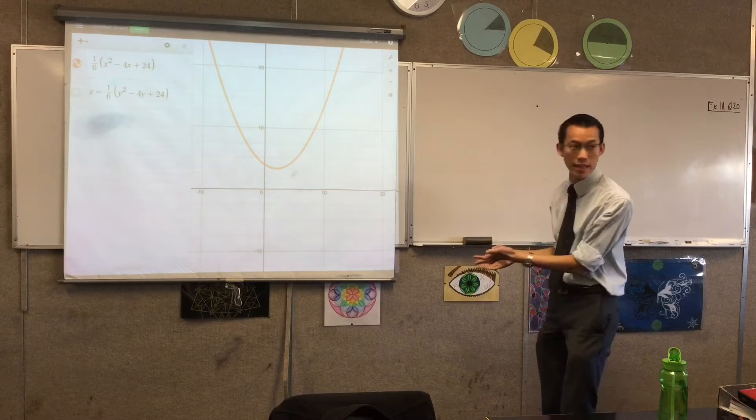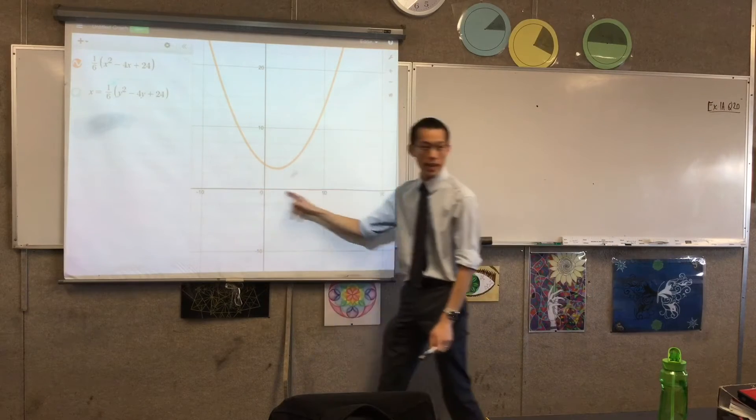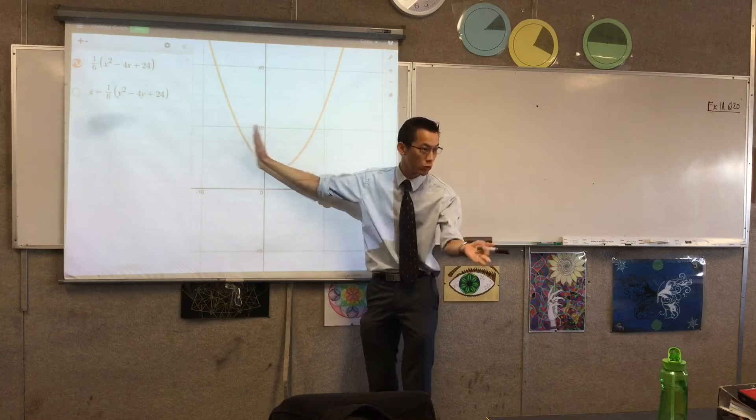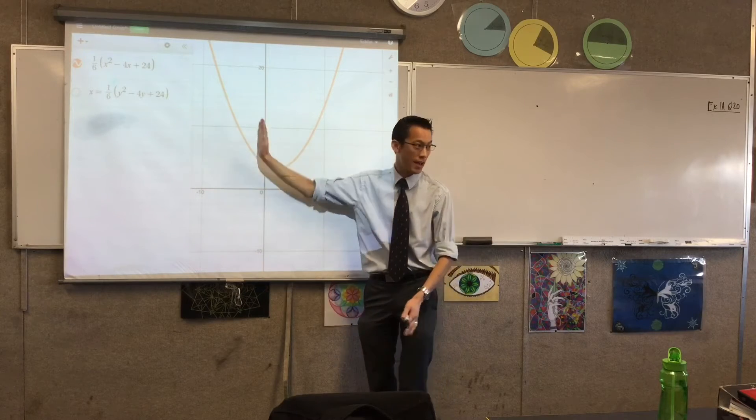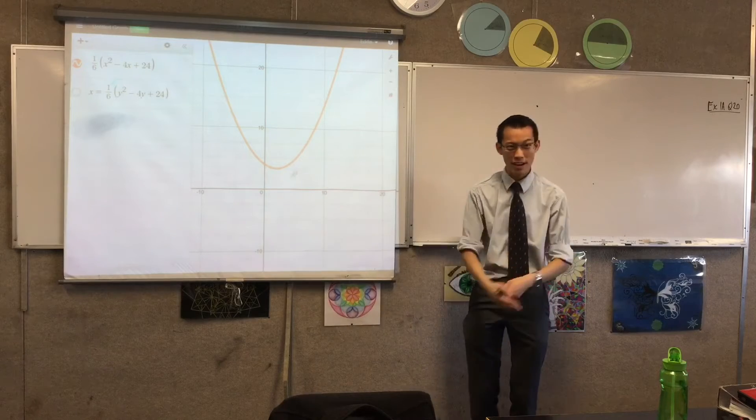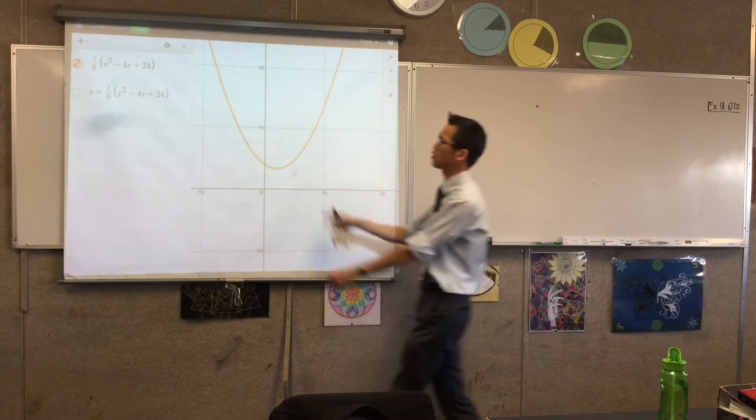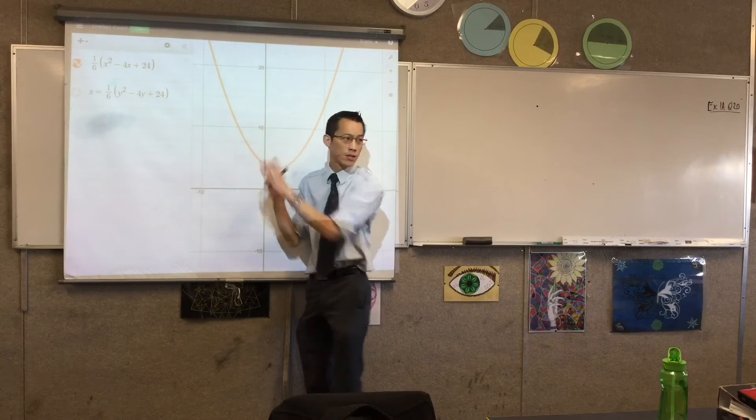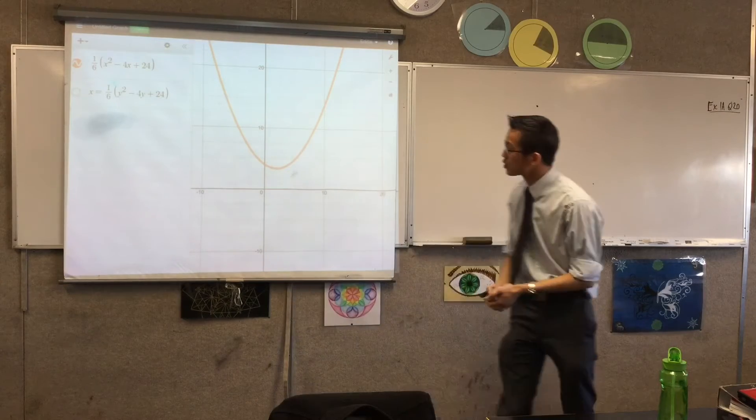Now, for every x, there is only one y, right? Like, I can give you x equals anything, so this is the vertical line test, right? So it passes that it's a function, but because it fails the horizontal line test, if I said to you y equals 10, well, there are two x's that will match that. So this is not one-to-one. So it fails that.